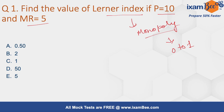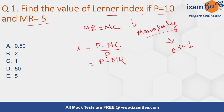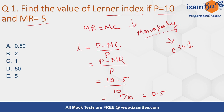The formula to calculate Lerner's Index is L equals P minus MC upon P. Since MR equals MC, we can replace MC with MR. For P equals 10 and MR equals 5, the Lerner's Index will be 5 upon 10, which equals 0.5. So the answer is A: 0.5.